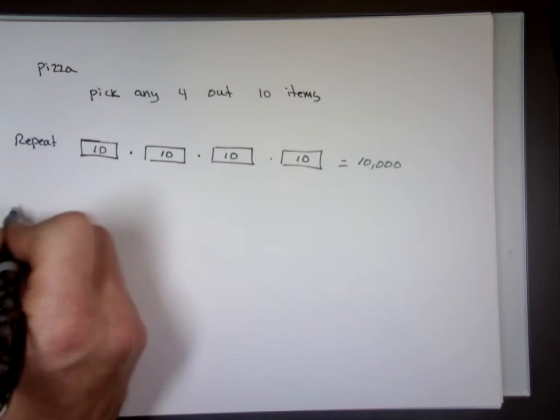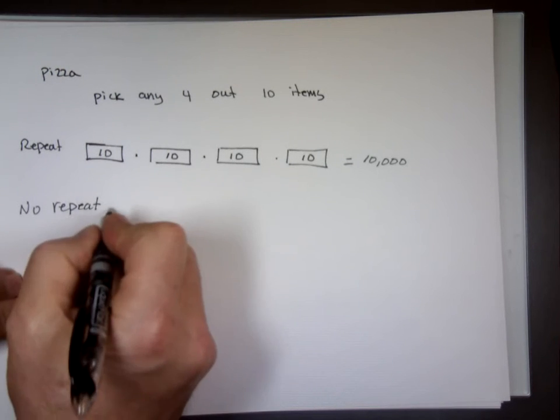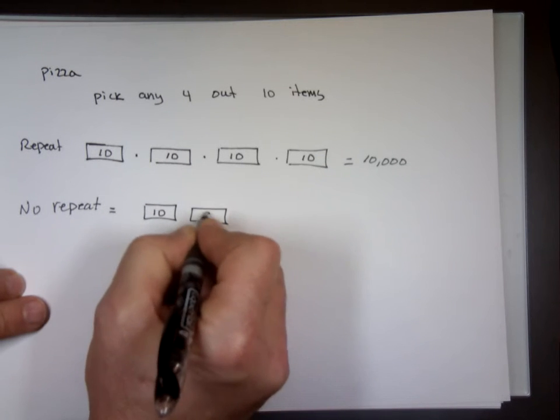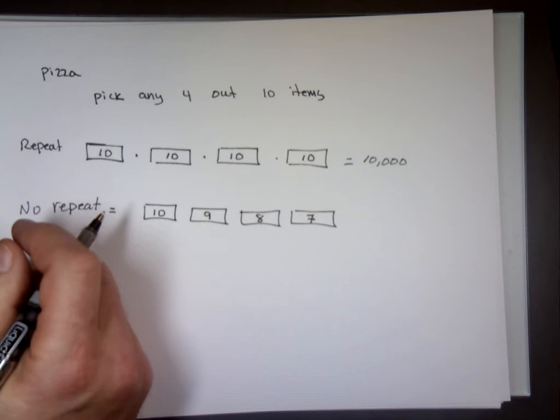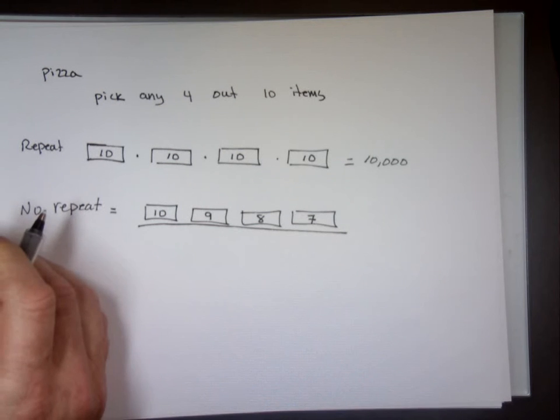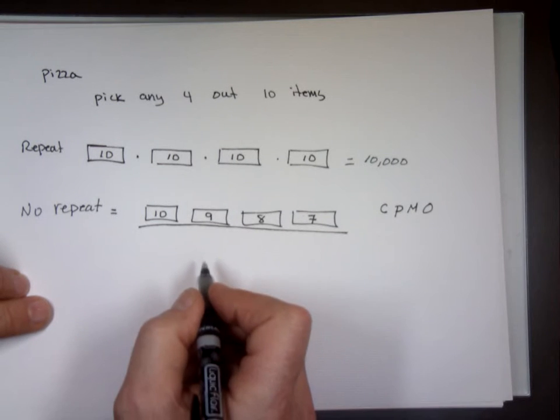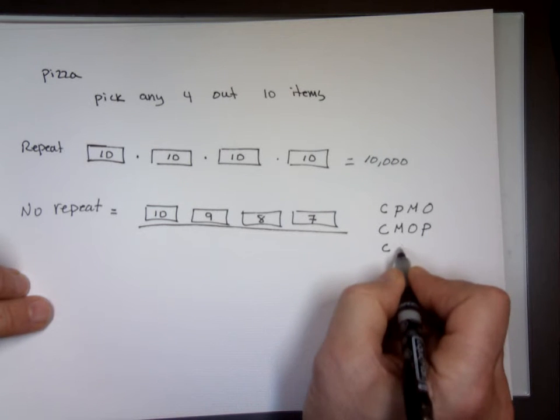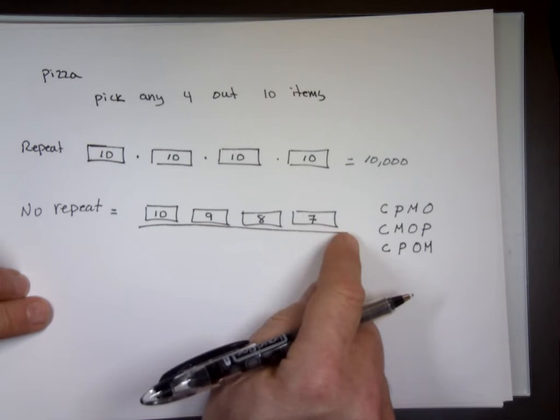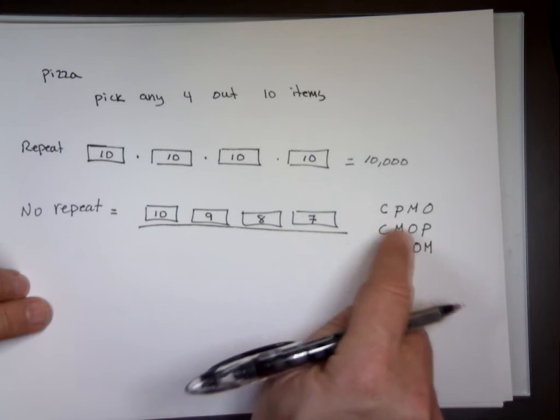Now, if it says no repeat. Yep. So probably 30 years, yeah. No repeat. What do we have? Ten for the first one, nine for the second one, eight for the next one, seven for the next one. But wait. I said wait. We're going to divide. Why? Cheese, pepperoni, mushroom, onions. Is that the same as cheese, mushroom, onions, pepperoni? Is it the same as cheese, pepperoni, onions, mushrooms? This one treats them as different ones.